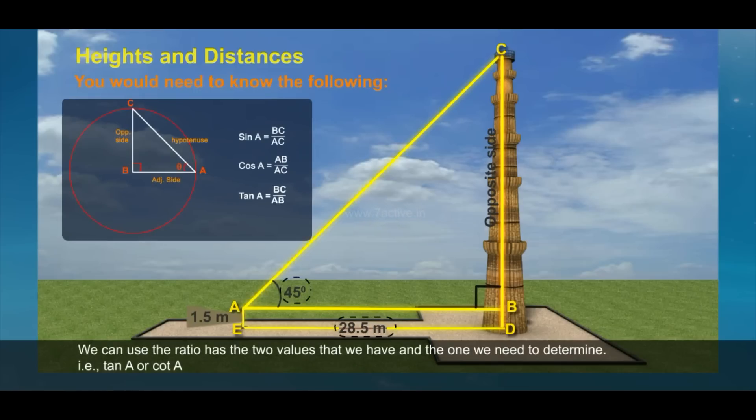We can use the ratio that has the two values that we have and the one we need to determine, that is, tan A or cot A.